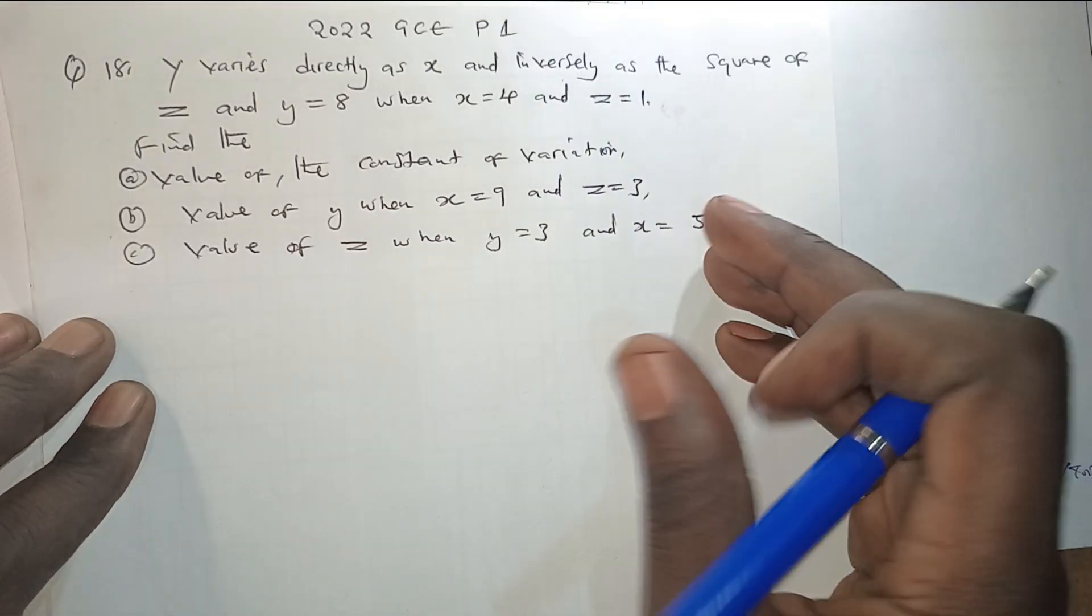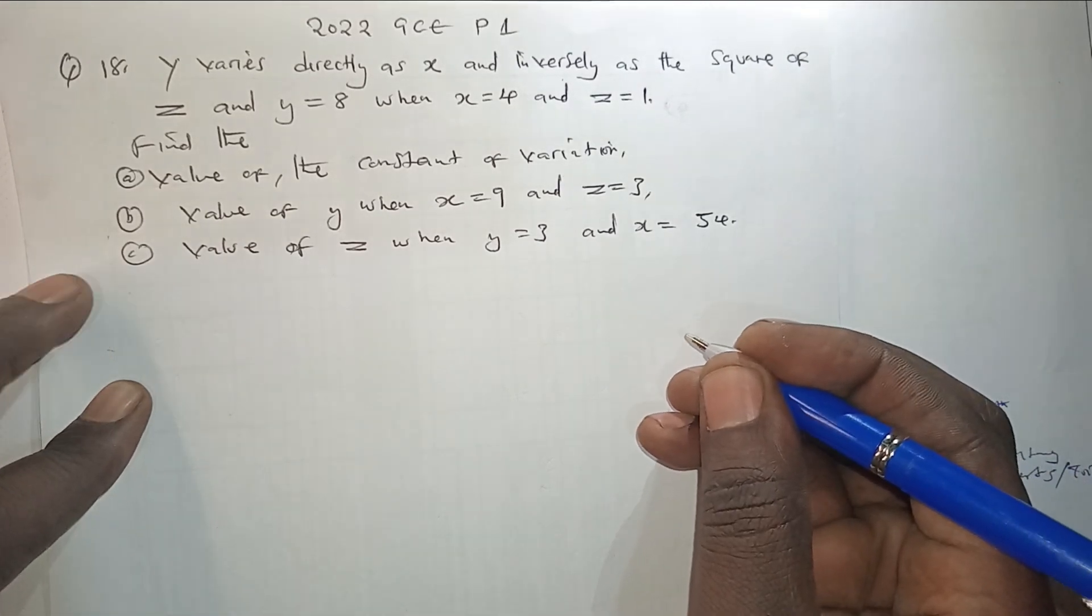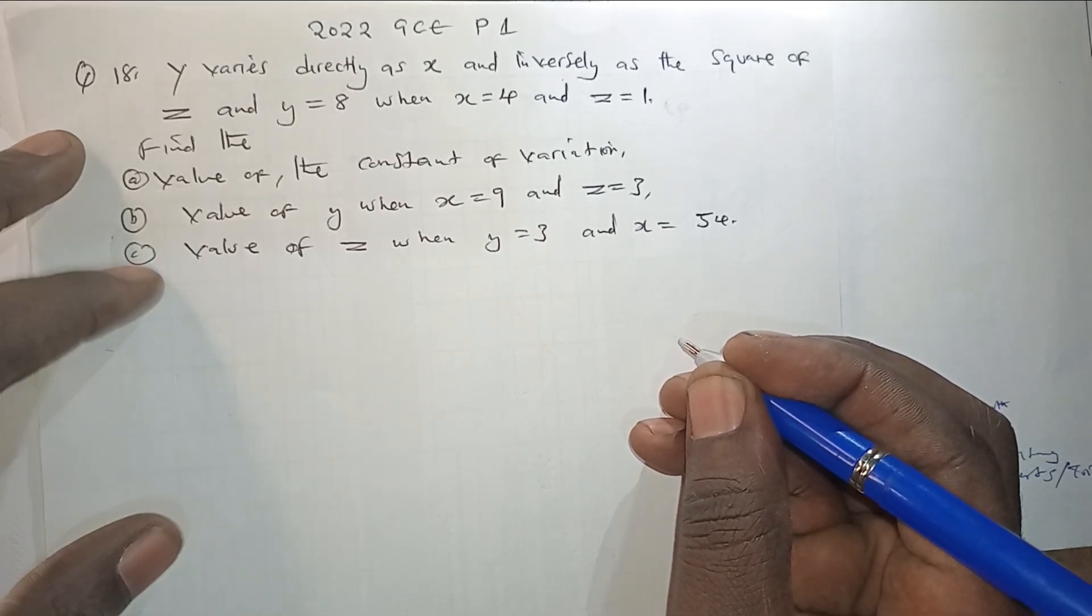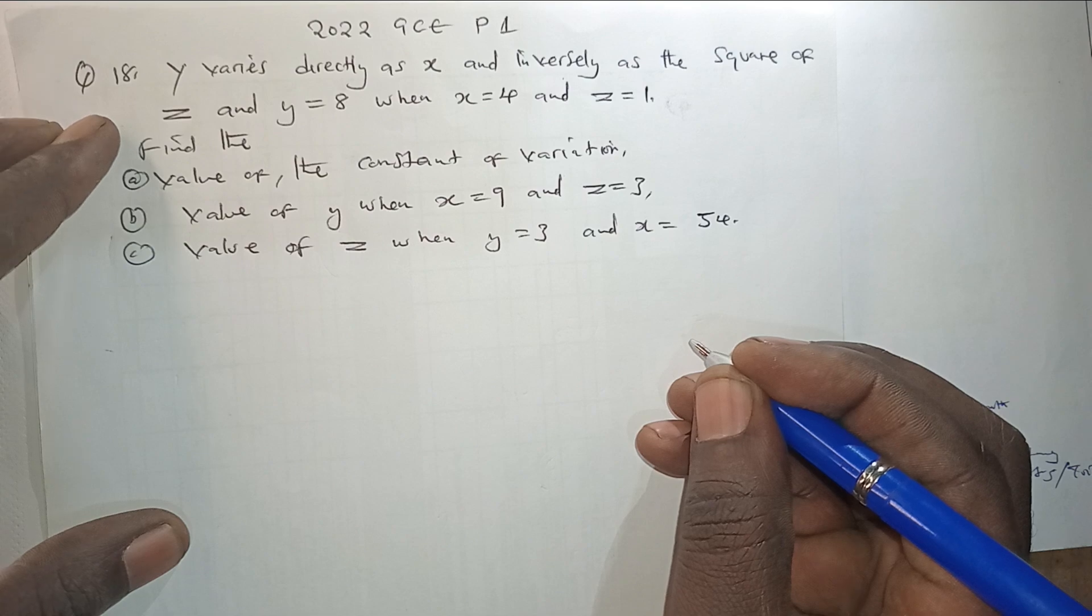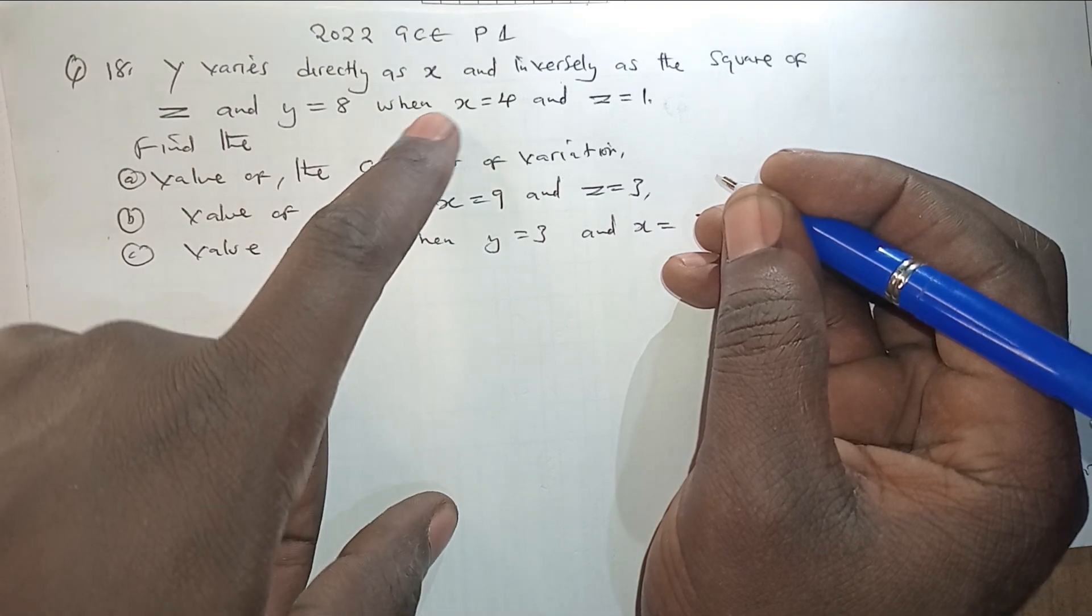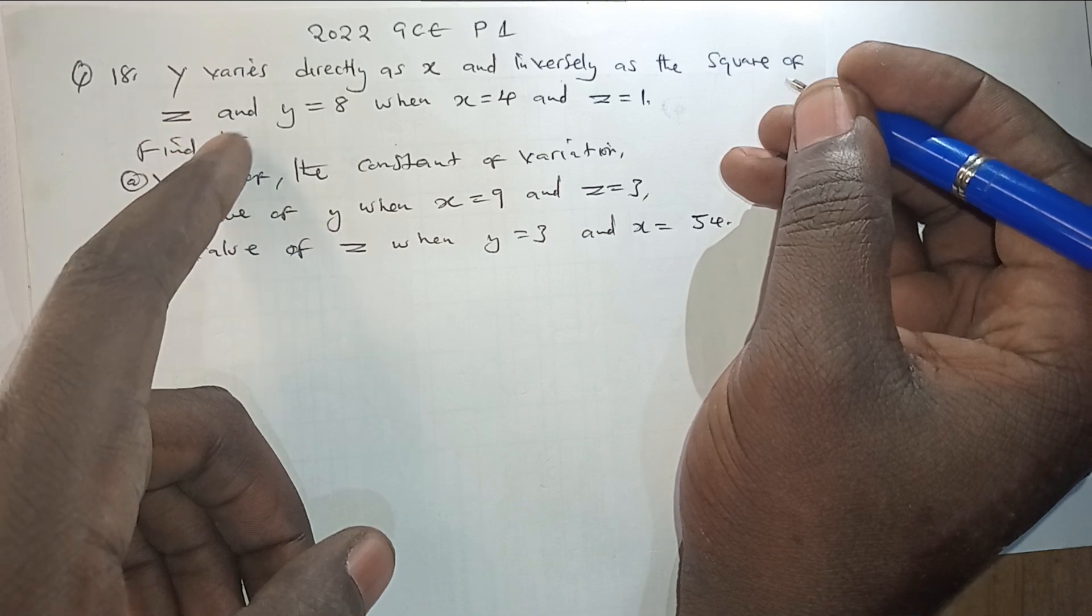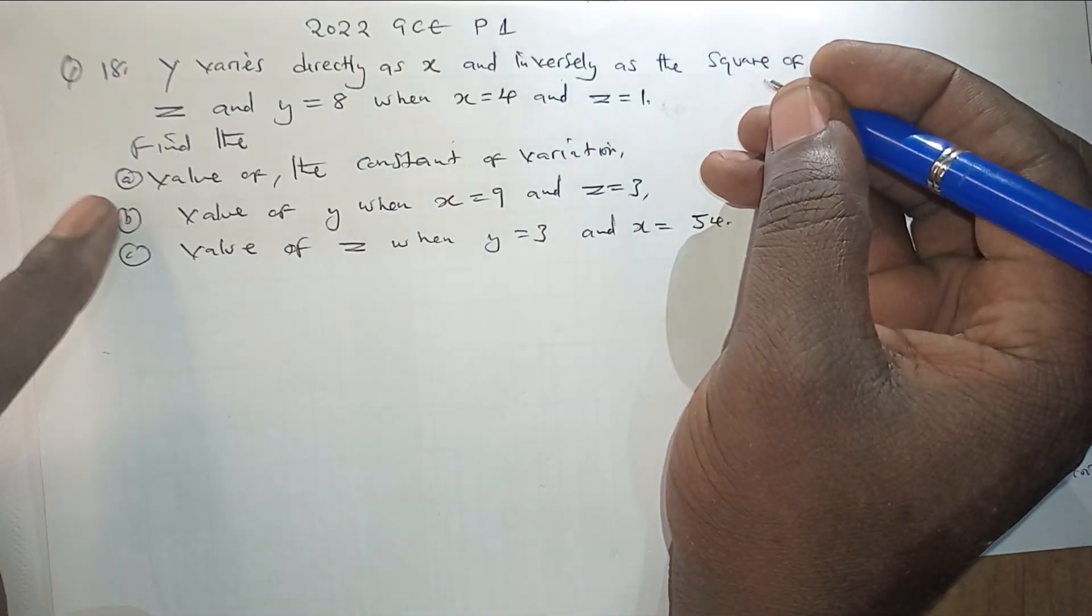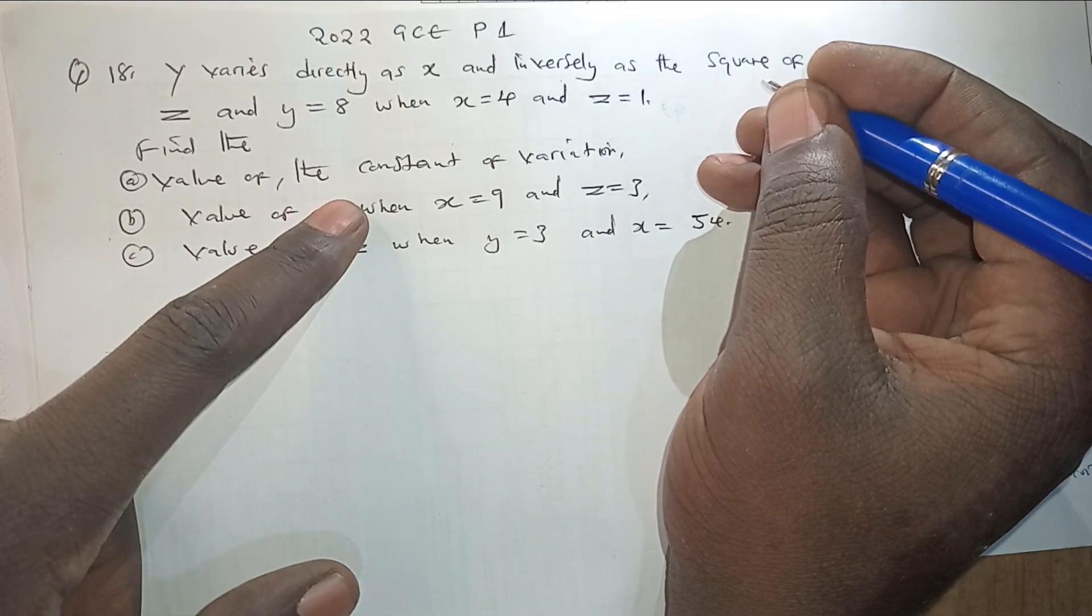Hello, I welcome you to this video where we want to look at the ECZ GCE Mathematics Paper 1 for the year 2022. Particularly we want to look at question 18 under the topic of variations. So the question is as follows: Y varies directly as X and inversely as the square of Z, and Y equals 8 when X equals 4 and Z equals 1. Find the value of the constant of variation.